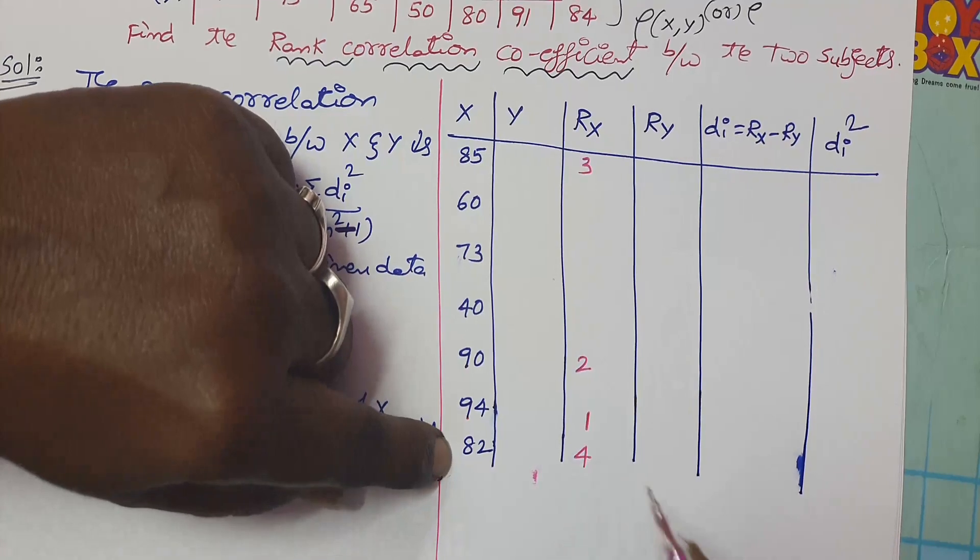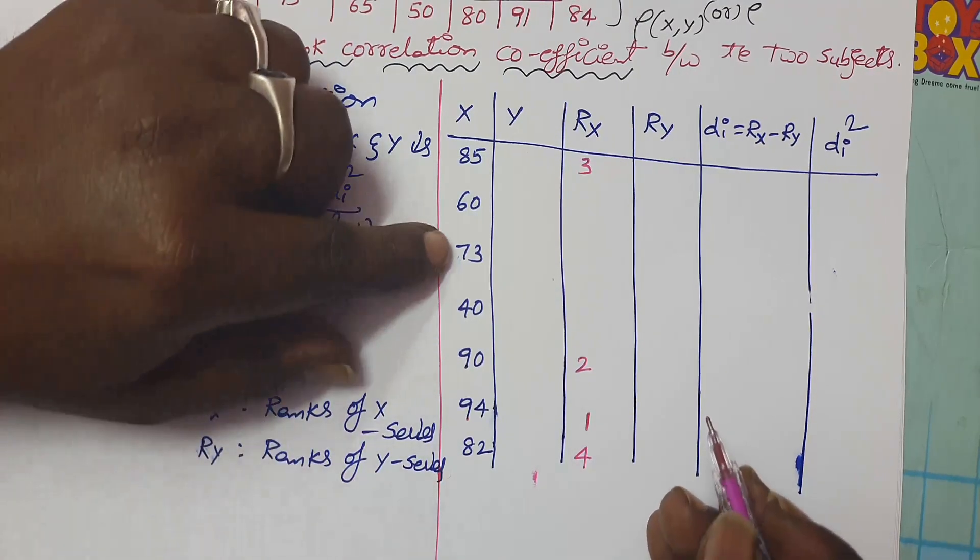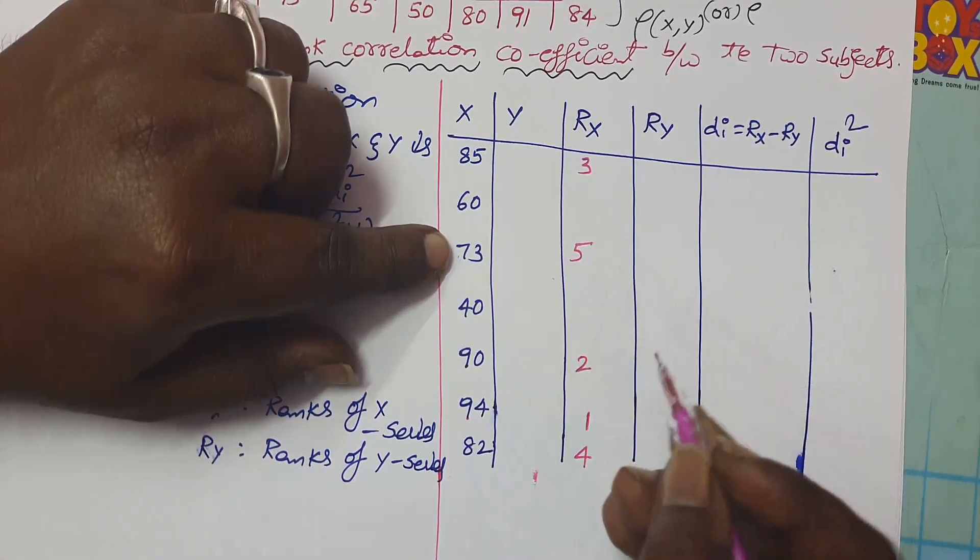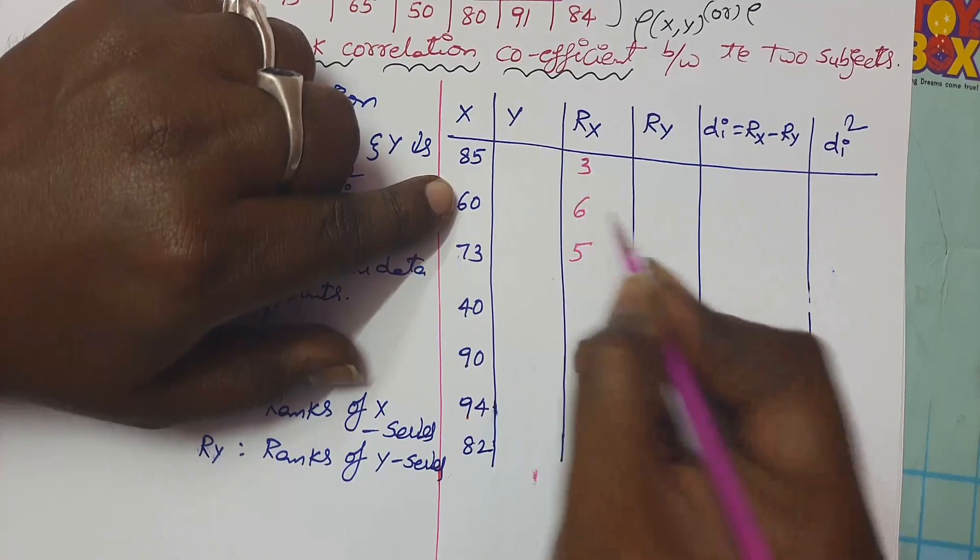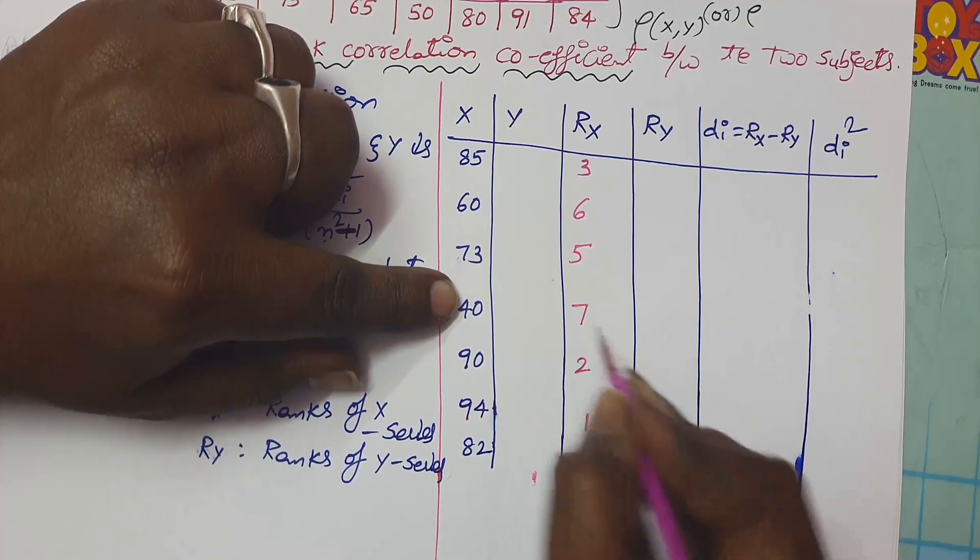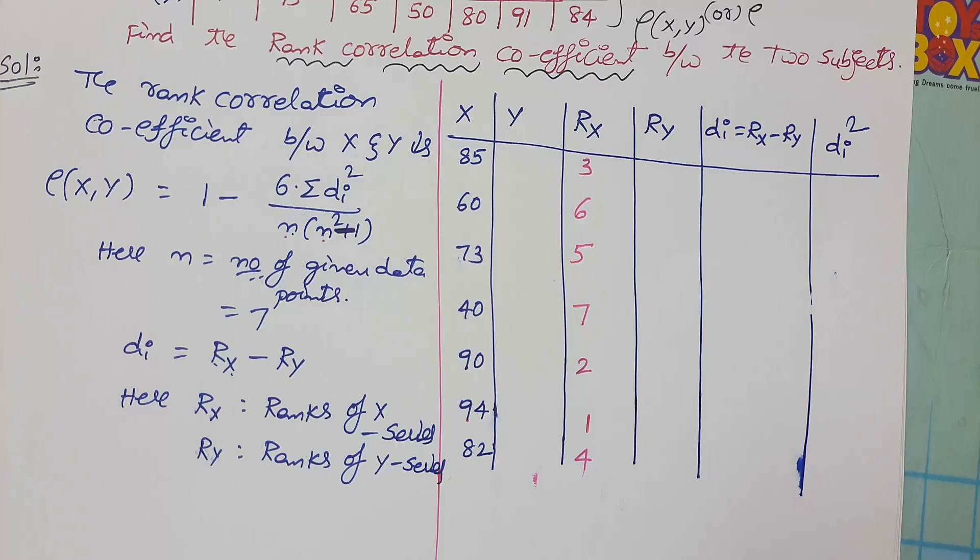Next, 73 is the fifth rank. Next, 60, it is the sixth rank. 40 is the lowest mark. That's why you got least rank, which is 7. Since there are 7 students, you have to give 7 ranks.